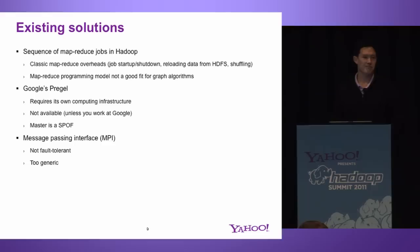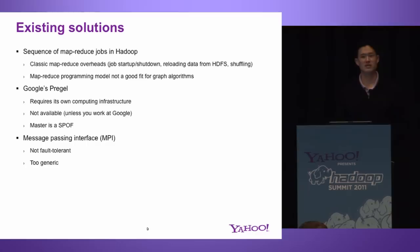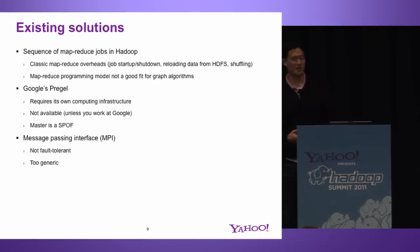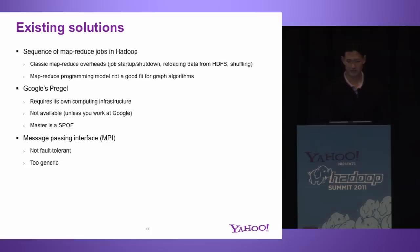Google came up with this great idea called Pregel, focused on the bulk synchronous parallel model. We can't use it because we work at Yahoo. Also, it requires its own computing infrastructure, so you have to have a completely separate infrastructure just for graph computations, and some people can't afford more than one cluster. There's also a master as a single point of failure in their system. Another solution we've used in the past was Message Passing Interface, or MPI. It's pretty fast, but the major problems are: one, you really don't have built-in fault tolerance, which is unfortunate on commodity hardware; and two, it's very generic — it's just about messages passed between processes, so building a graph processing infrastructure on top of it is a lot of work.